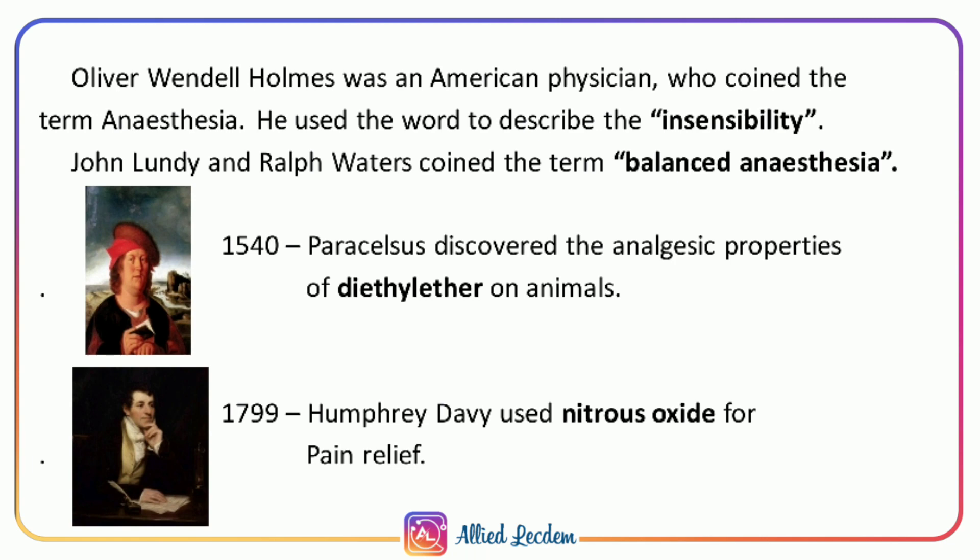Paracelsus, in 1540, discovered the analgesic property of diethyl ether on animals. So while William T.G. Morton discovered diethyl ether's property on humans, Paracelsus had administered it on animals. Paracelsus was a German-Swiss physician who established the role of chemistry in medicine.